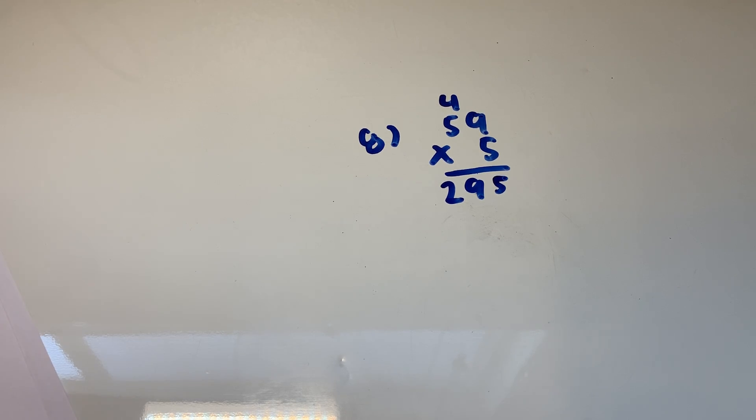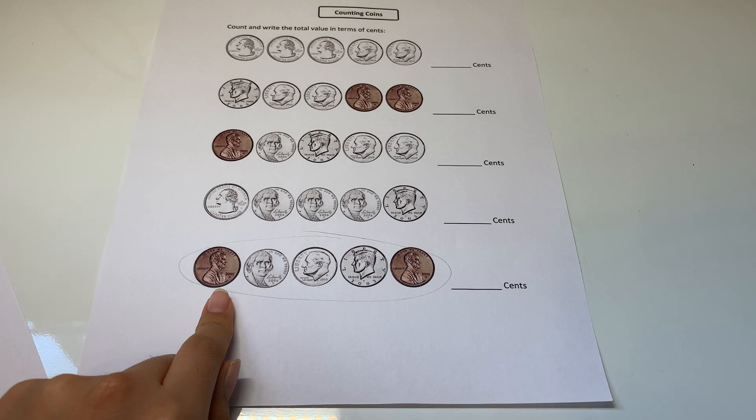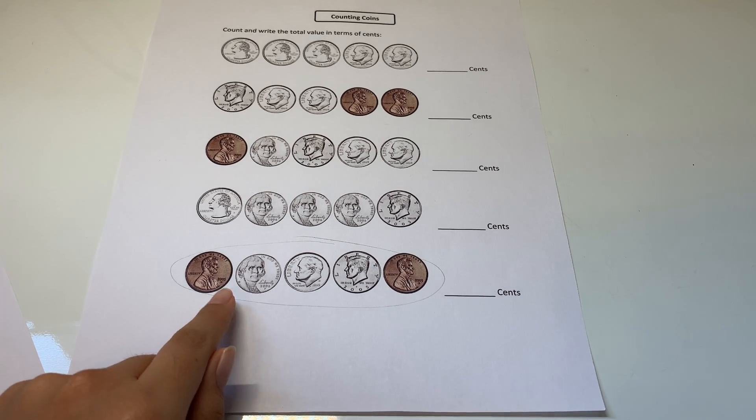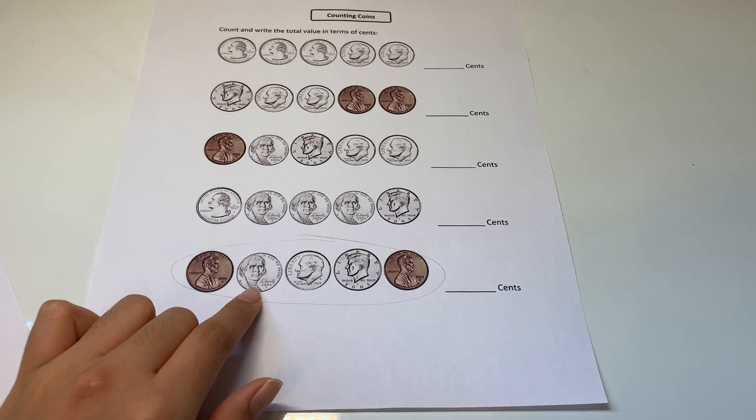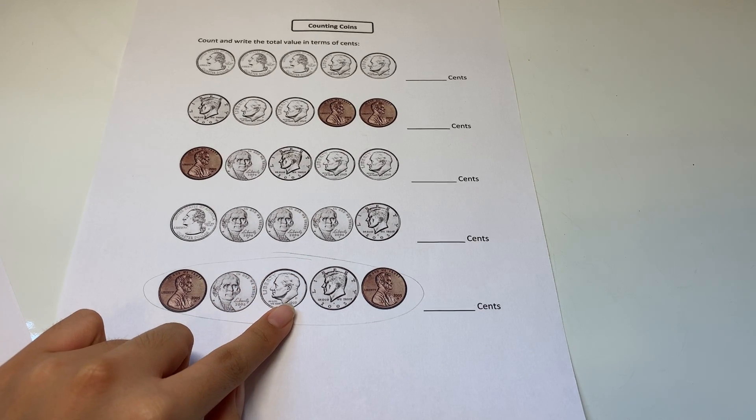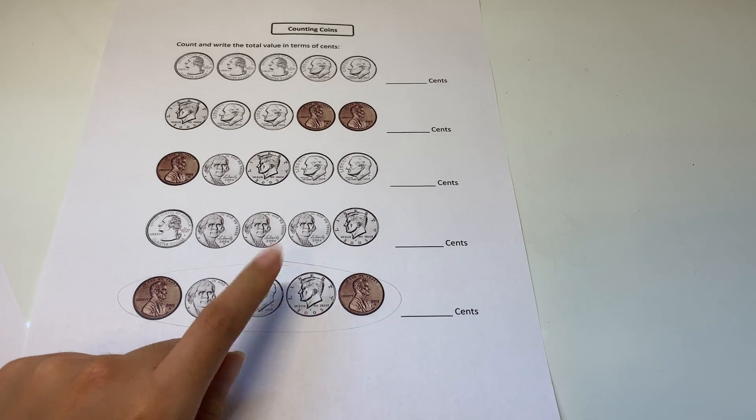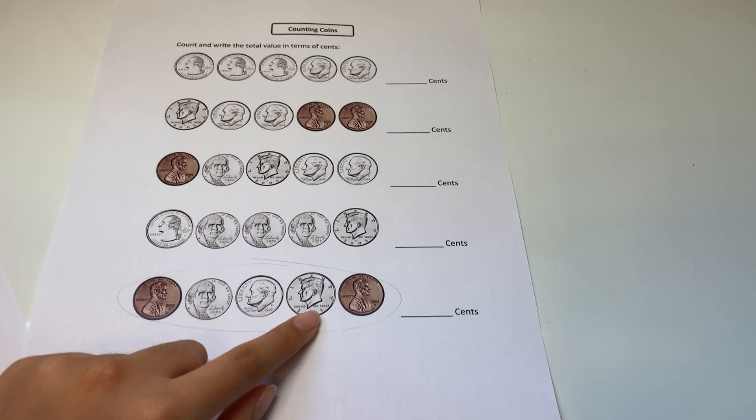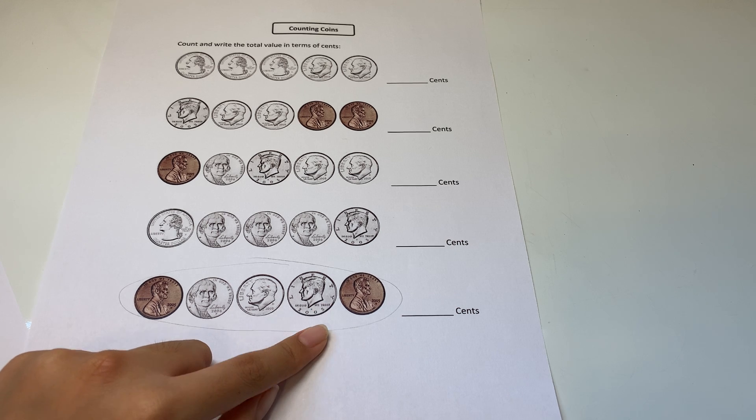And we're going to move on to counting coins. So we're going to be doing the very last one. Before we do that, let me just explain all the types of coins. So we all know that the brown one is a penny, right? And all the rest are silver. So we have to be very careful. This one right here with the man's face facing forward is a nickel. And this one is the dime. It doesn't show well here, but the dime is the smallest of all the coins. So it should be pretty easy to recognize. And this is a half dollar. It's supposed to be really big.